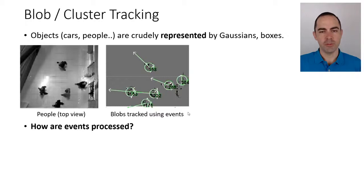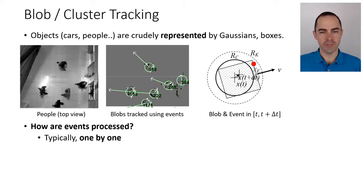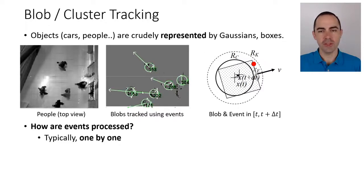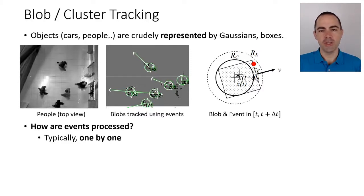How are events processed? Typically one by one — and that's the paradigm shift. Because now we are not processing full images when they come; we just process the events. Events are treated as single events, as points on the image plane. Only the locations where an event was triggered are processed — that's what processing one by one means.